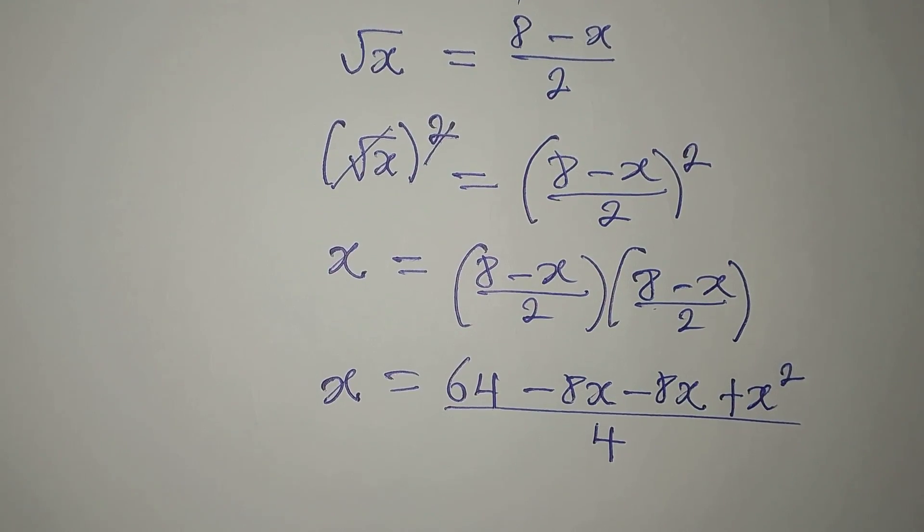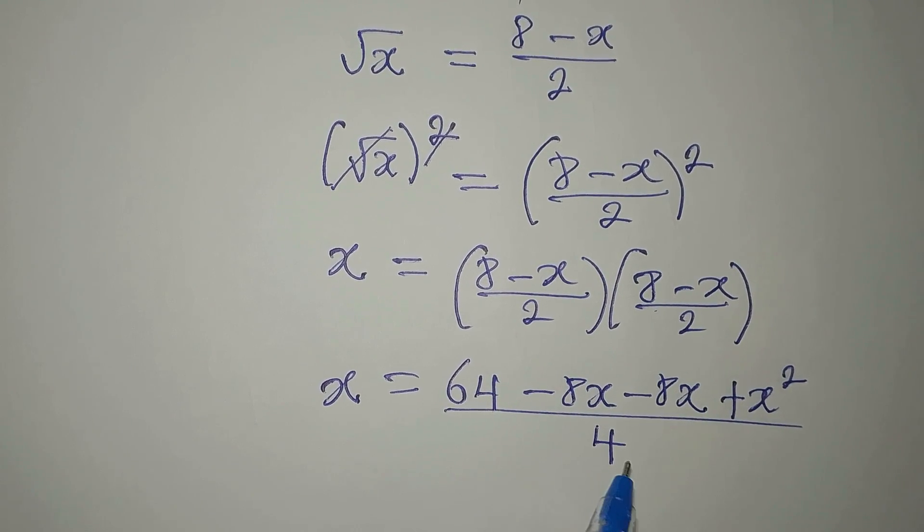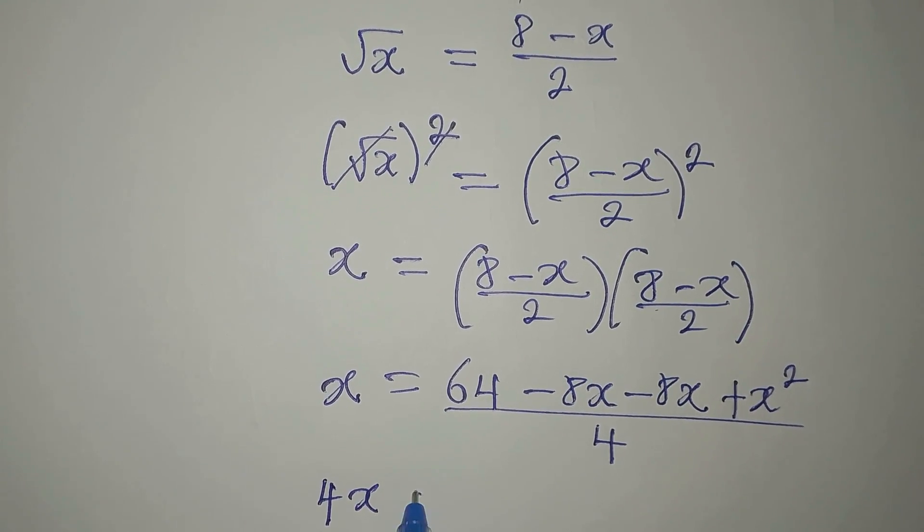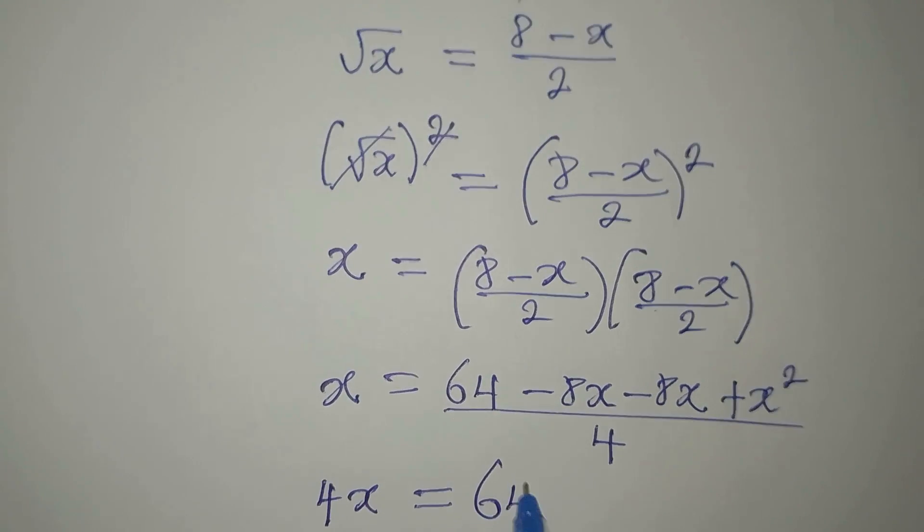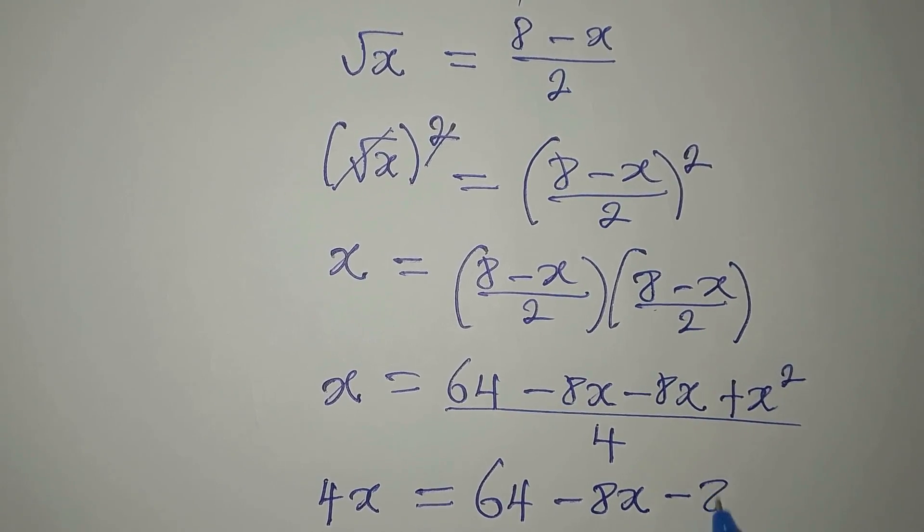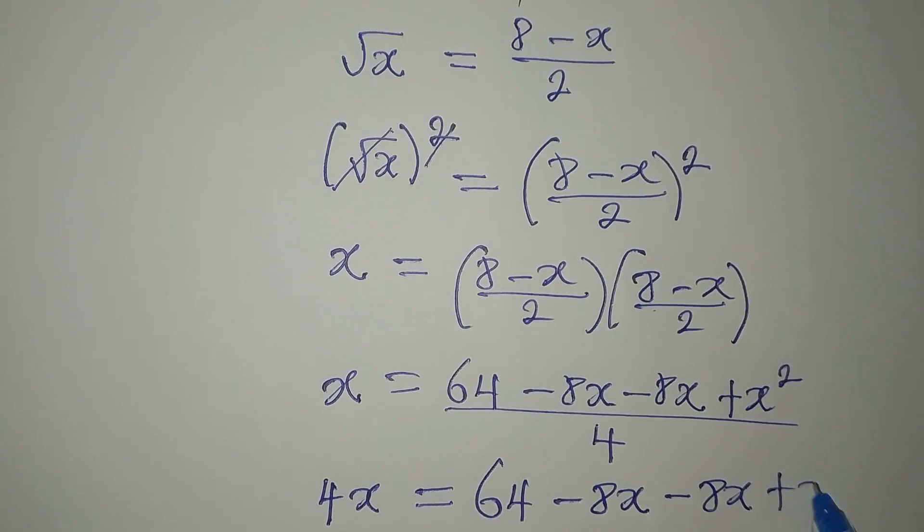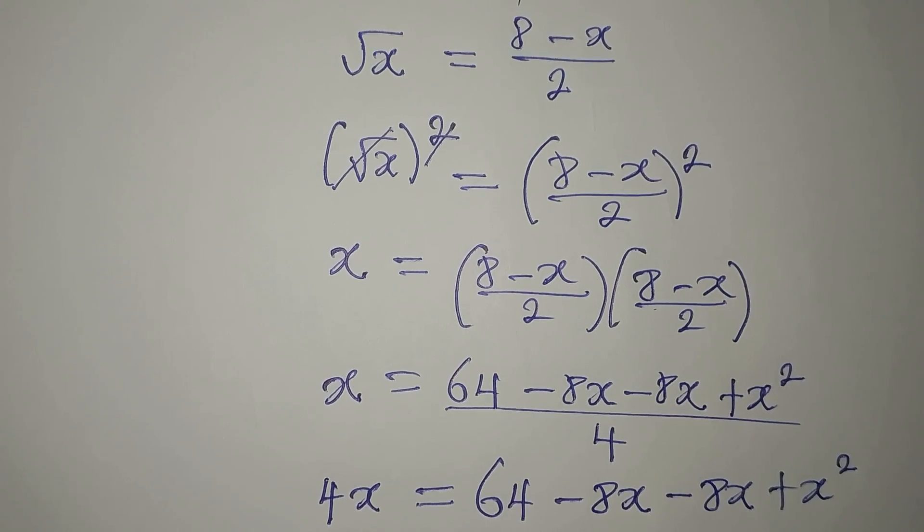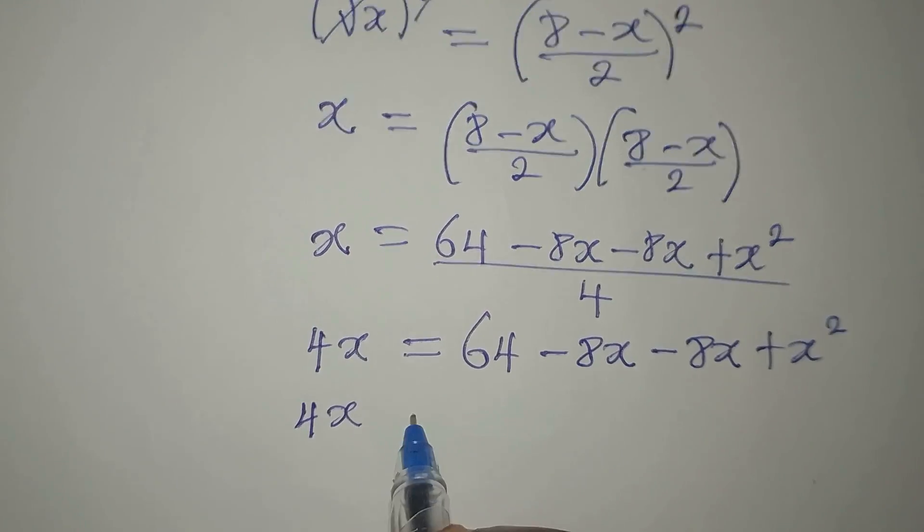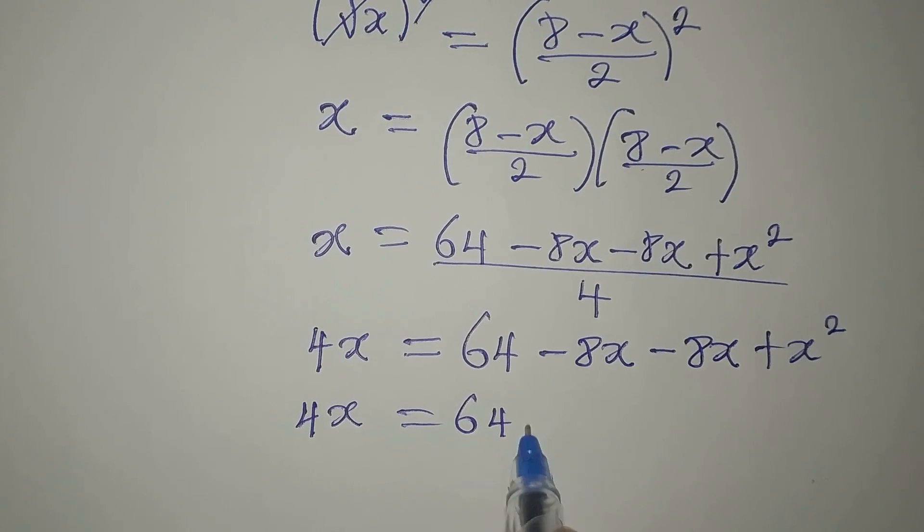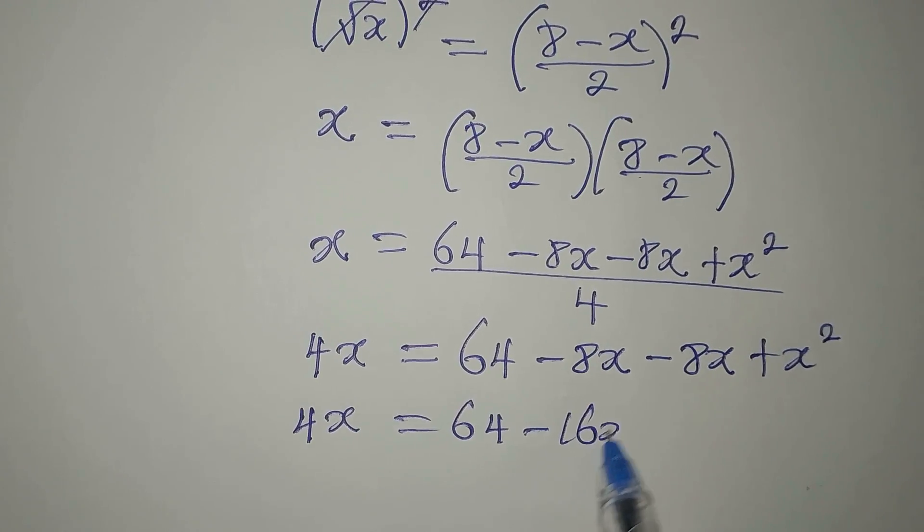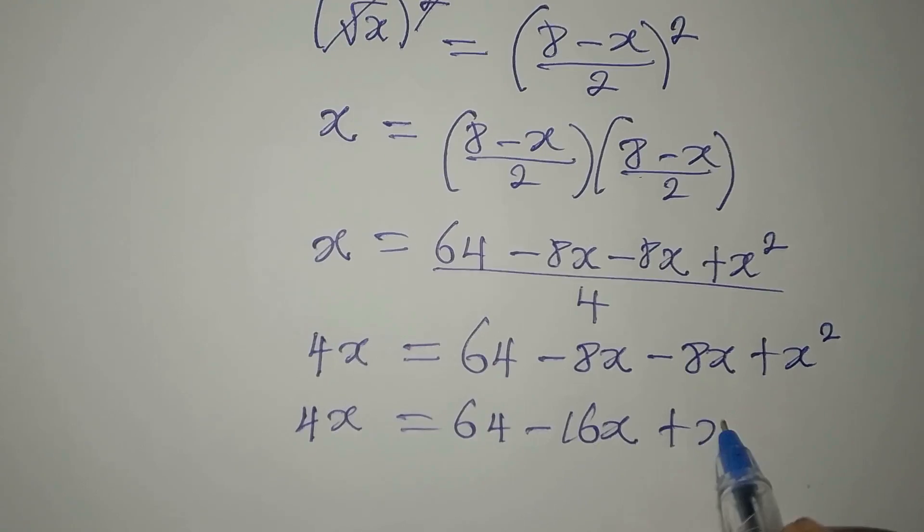Now why don't you cross multiply? Since we have one fraction here, it's going to be this times this. So we have 4x, and it's equal to 64 minus 8x minus 8x plus x squared. Now let's add these two terms. So we have 4x equals 64 minus this and this will give us minus 16x then plus x squared.